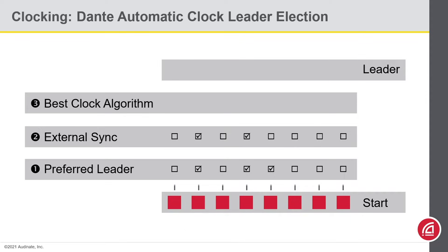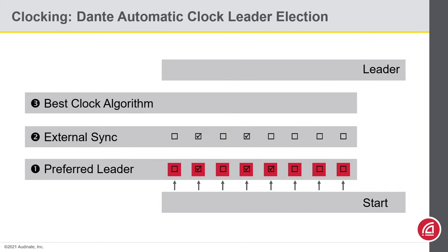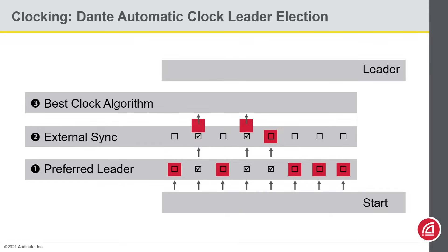You can see I have some devices checked for preferred leader and some for external sync. The first question is whether any devices are chosen as preferred leader. In this step, we can see three of them are, so they move on in the election process. The next question is whether any are chasing external sync — two of them are, so they move on in the election process.